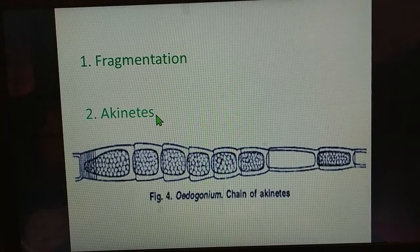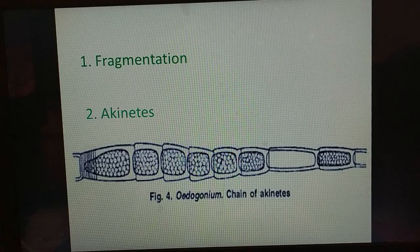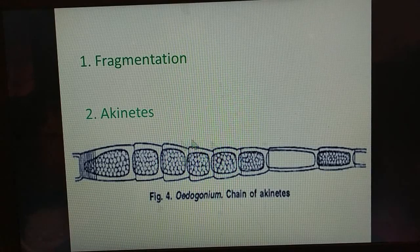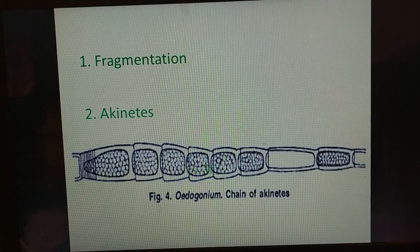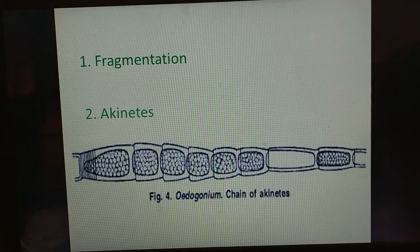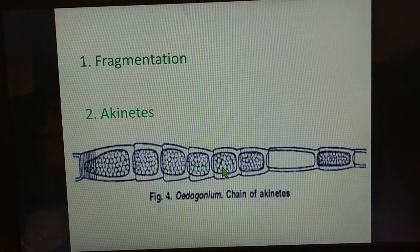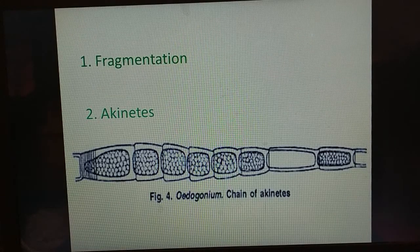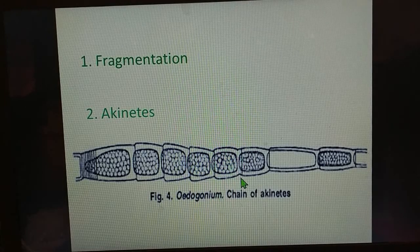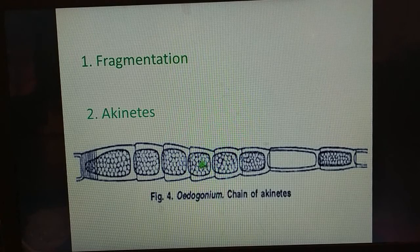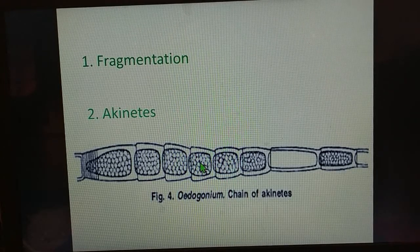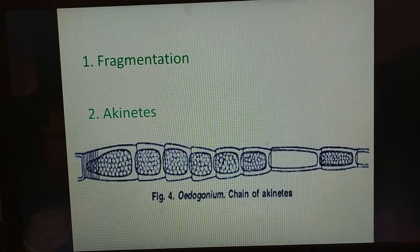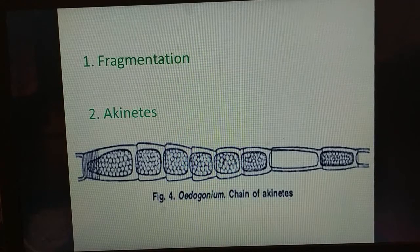The next method is akinetes. Akinetes are thick-walled reddish or brownish structures which are usually formed in small chains. They form during unfavorable conditions, but will germinate only when conditions become favorable, forming new filaments.